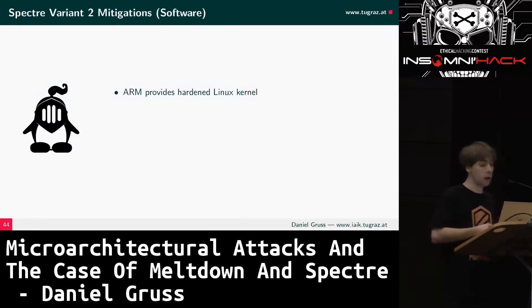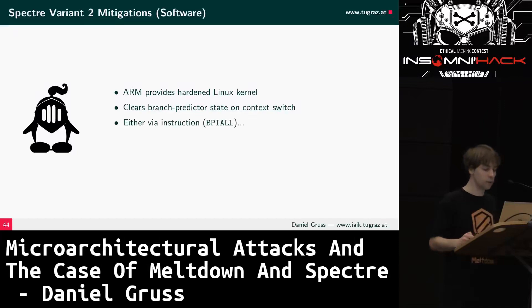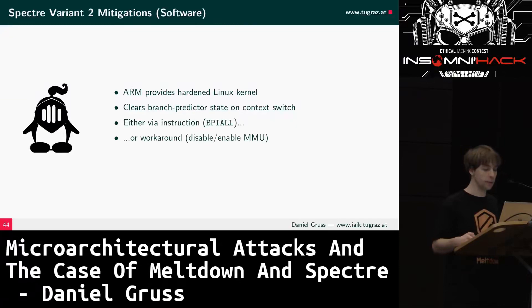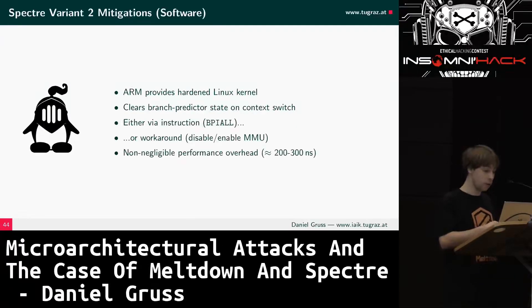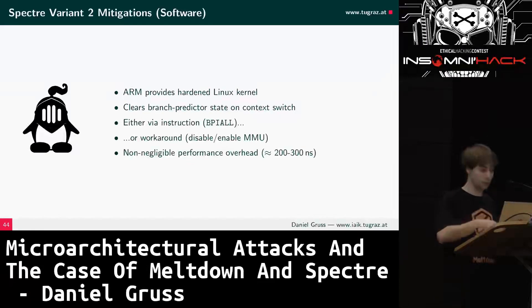ARM also addressed Variant 2 by providing a hardened Linux kernel that clears the branch predictor state on context switches. They don't have hyperthreading, so they don't share some of Intel's vulnerabilities. ARM introduced new instructions for this, or you can disable/enable the MMU to achieve the same effect. This has a non-negligible overhead, but we don't want these vulnerabilities in our systems, and hopefully more modern CPUs will reduce the overhead.